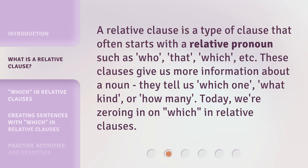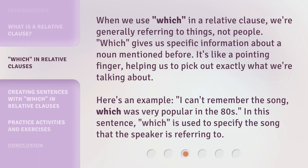Today, we're zeroing in on which in relative clauses. When we use which in a relative clause, we're generally referring to things, not people. Which gives us specific information about a noun mentioned before. It's like a pointing finger, helping us to pick out exactly what we're talking about.